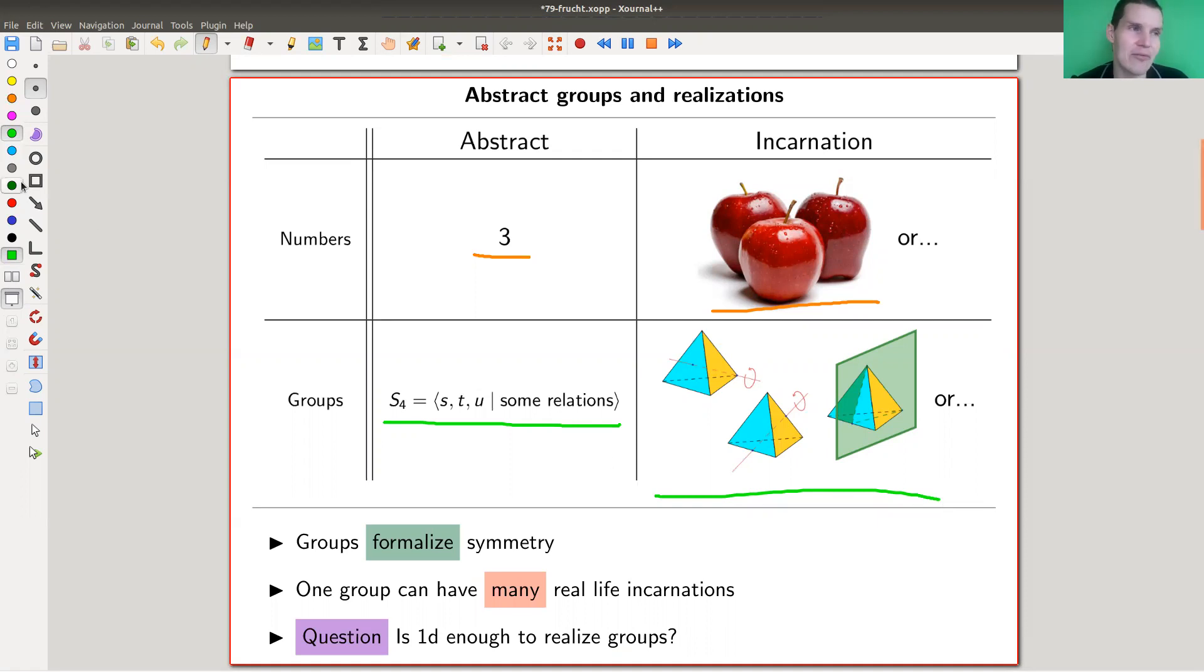But as usual, kind of maybe not as usual, but certainly there are not just three apples, there are also three pears or three bananas or whatever. So apples are just one incarnation and similar here. And you could kind of ask for nice incarnations of a given group. So groups formalize symmetries and one group can have many, let me call them real-life incarnations.